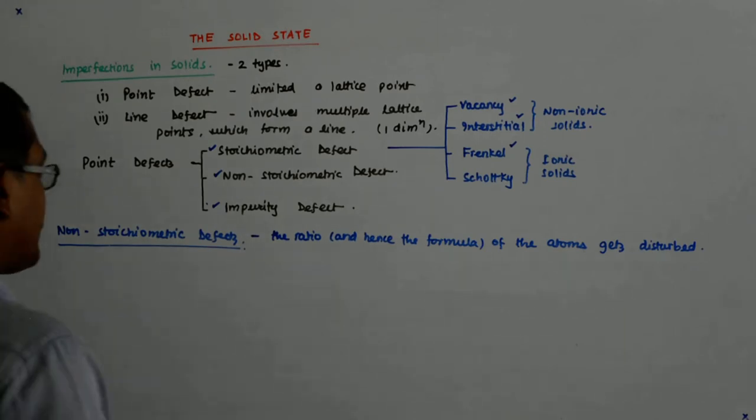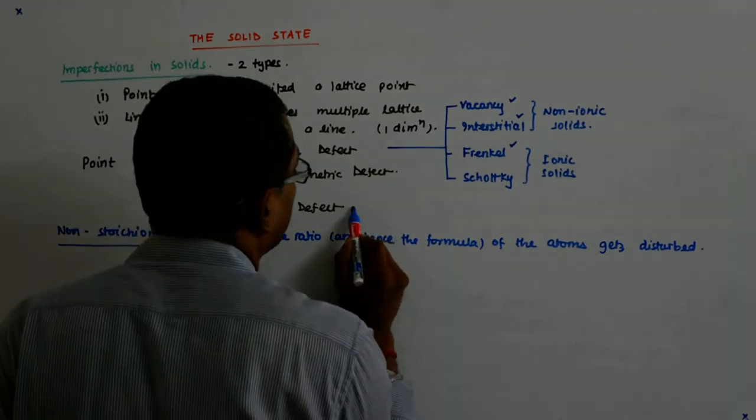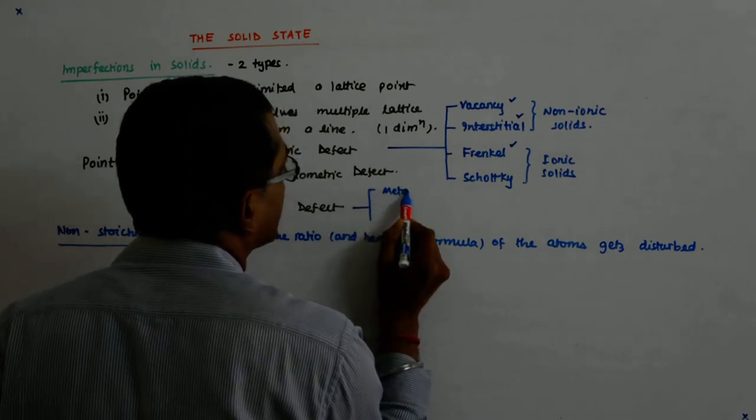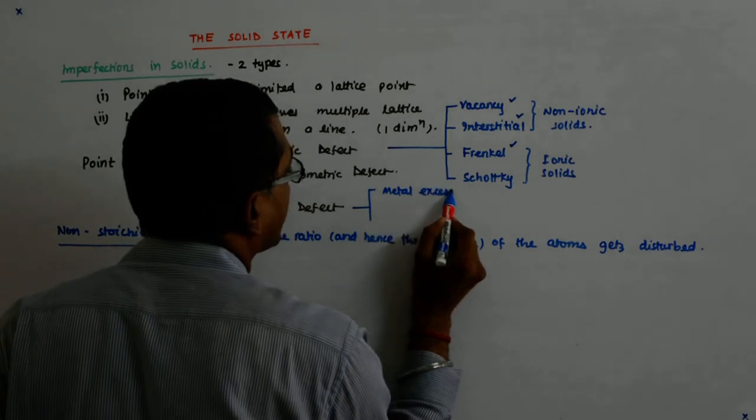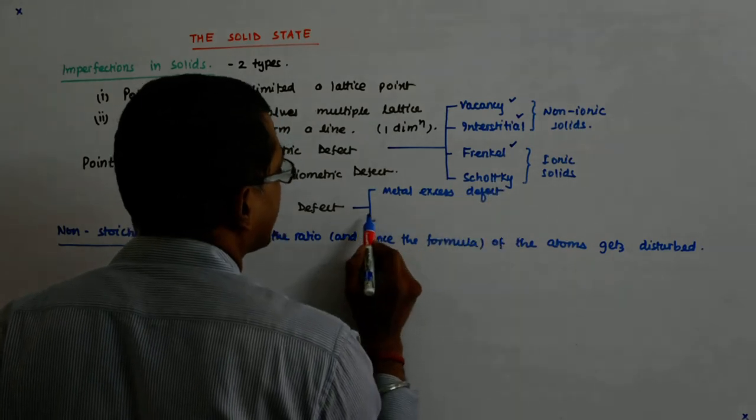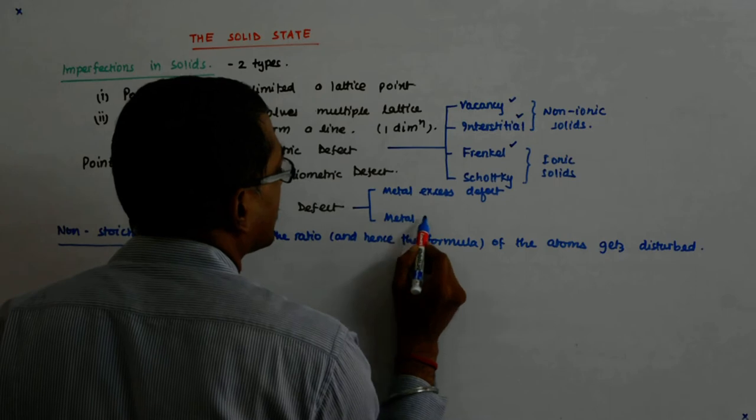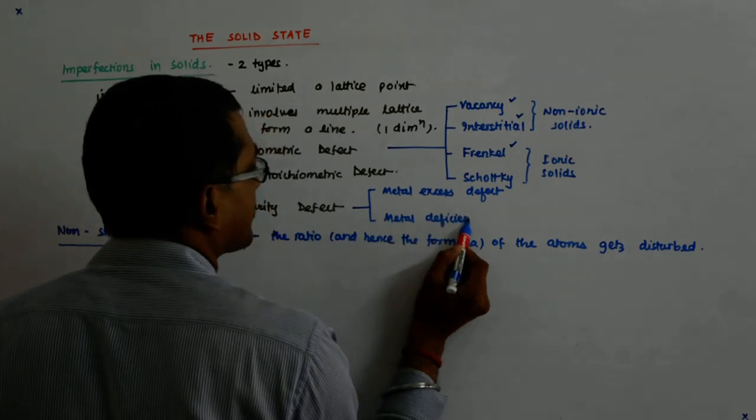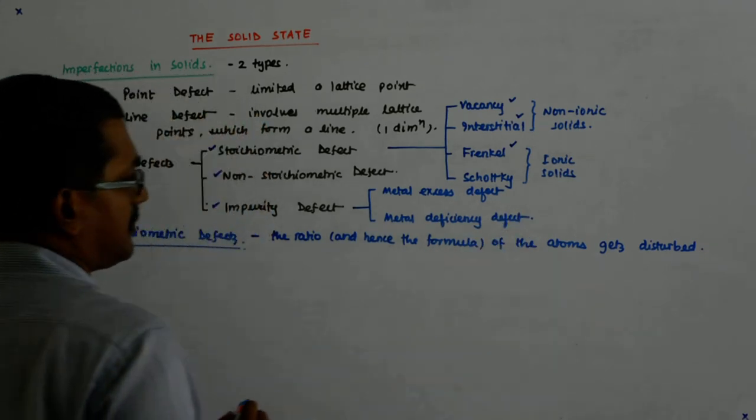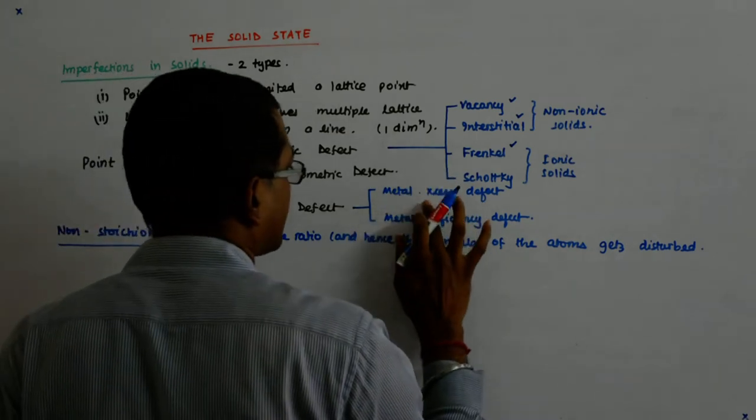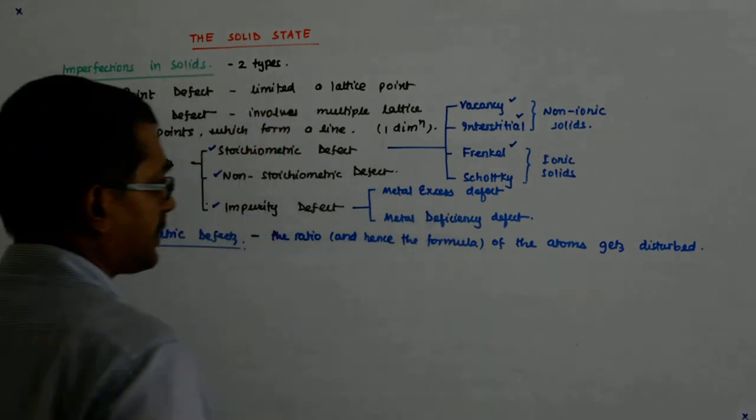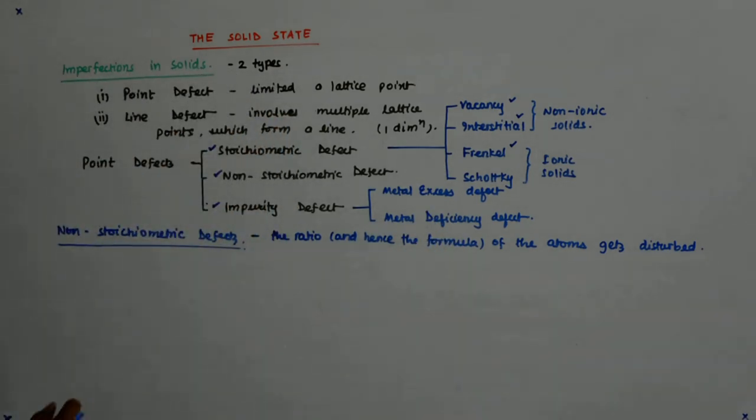They are basically of two types. There is a metal excess defect and there is a metal deficiency defect.